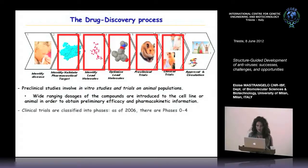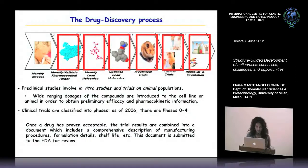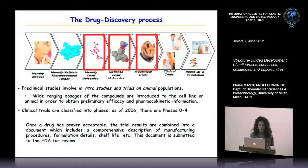We can then start clinical trials on humans, which are classified into five phases. Once we have a drug, all results are combined into a document submitted to the Food and Drug Administration for review and approval. What we do in our lab is mainly the identification of lead molecules, some optimization, and in collaboration with other groups, some preclinical trials data.